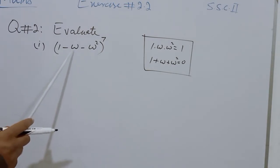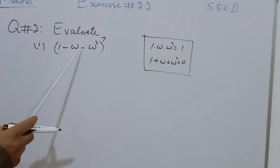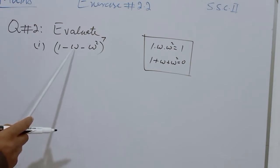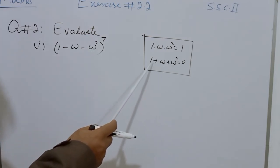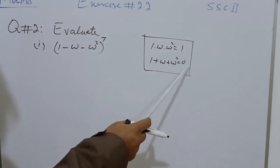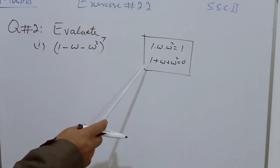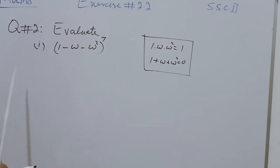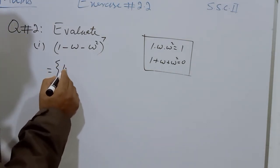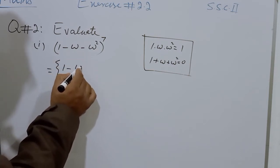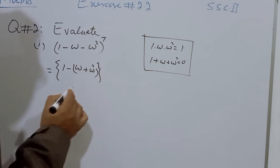From (1 minus omega minus omega squared), I will take minus as common and what is left over will be (omega plus omega squared). In place of omega plus omega squared, we will transfer this one to the other side and it will become minus. So in place of omega plus omega squared, I will put minus 1. It will become (1 minus (minus 1)) to the power of 7.